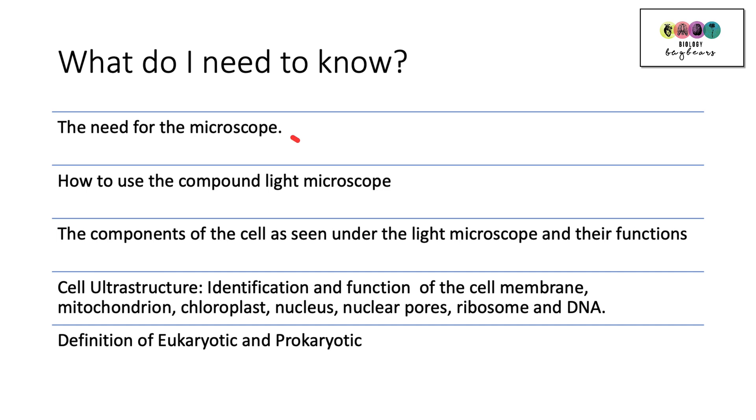What do I need to know? We'll firstly begin with the need for a microscope. Be able to explain why you need a microscope and why you can see certain things in the cell using the compound light microscope and why you need the electron microscope to see that extra detail. Be able to explain how you use the light microscope, the compound light microscope, and there's a separate video on that. Know the components of the cell as you would see them under the light microscope and give their functions.